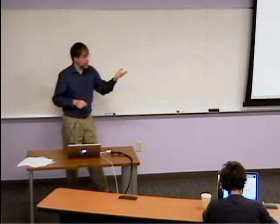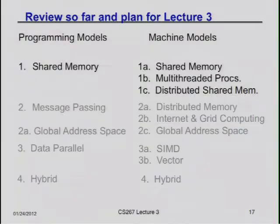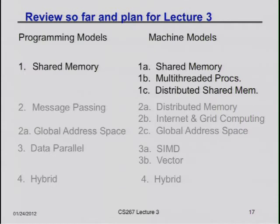There are programming models — what your code looks like, what your software looks like — on one side. On the other side, you have machine models, how the hardware looks at a high level. Historically, people built machines and the programming models just matched. Whatever the hardware instructions were appeared in the language. That has grown apart over time, because people are tired of changing their programs every time a new computer architecture comes out.